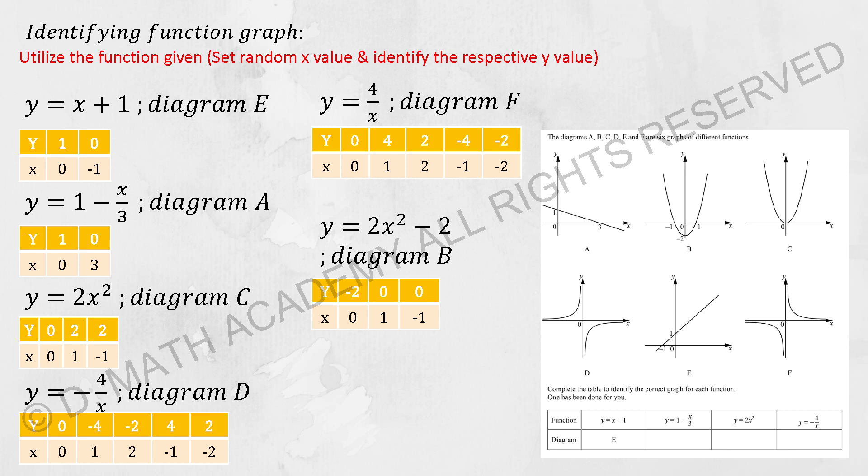Y equals X plus 1. So when Y equals 1, my X will be 0. And when Y equals 0, my X will be negative 1. This one was actually represented using graph E.